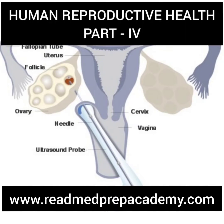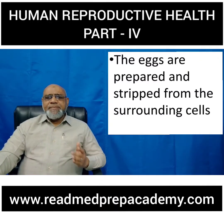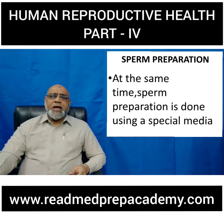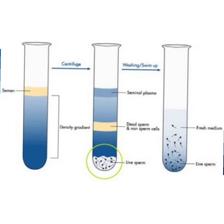The eggs are prepared and stripped from surrounding cells. For sperm preparation, semen is taken in a density gradient solution and centrifuged. The seminal plasma accumulates on the surface, dead or damaged sperms accumulate in the middle, and good motile live sperms accumulate at the bottom as sperm pellets. These sperm pellets are removed, washed, and diluted in a fresh medium containing live, good quality sperms.